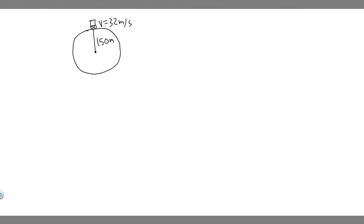In this problem, we're told a certain light truck can go around a flat curve having a radius of 150 meters with a maximum speed of 32 meters per second. With what maximum speed can it go around a curve having a radius of 75 meters?